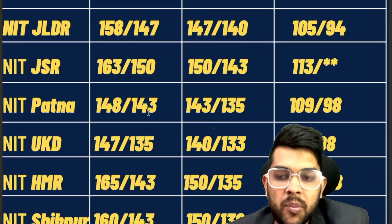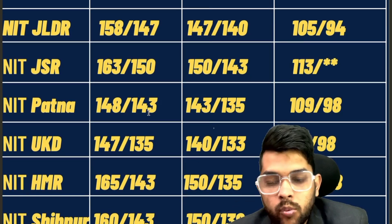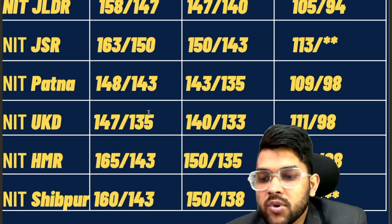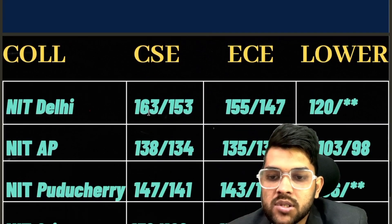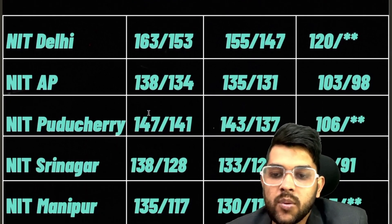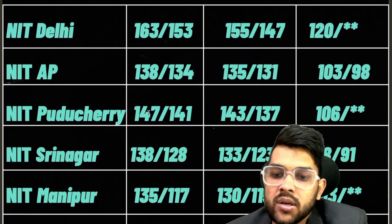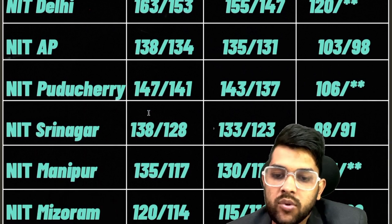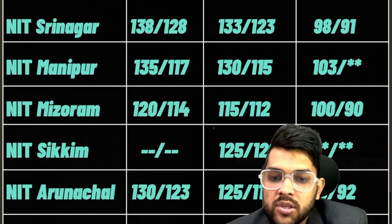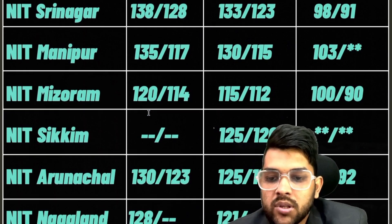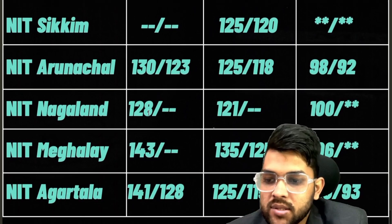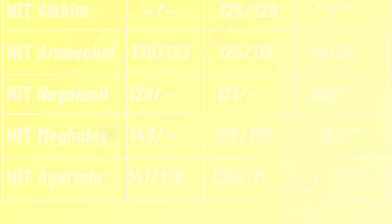After the slash you can check for female. All data is for other state status — for home state you can get in with slightly less marks, and this is for first attempt only. For Sripur: 161, 150, lowest 104. For Delhi: 163, 155, lowest 120. For NIT Andhra Pradesh: 138, 134. For Puducherry: 147, 143, lowest 106. For Srinagar: 138, 133, lowest 98. For Manipur: 135, 130, lowest 103. For Mizoram: 120, 115, lowest 100. For Sikkim: 125 for EC — other data not available. For Arunachal: 130, 125, lowest 98. For Nagaland: 128, 121, lowest 100. For Meghalaya: 143, 135, lowest 106. For Agartala: 141, 125, lowest 100.